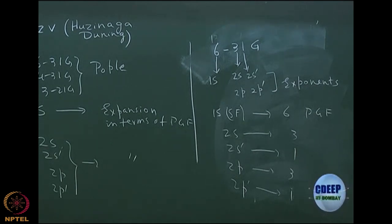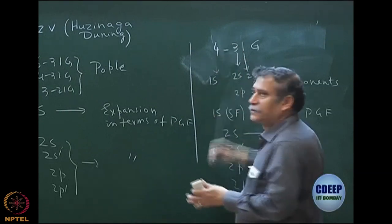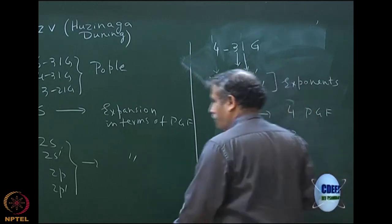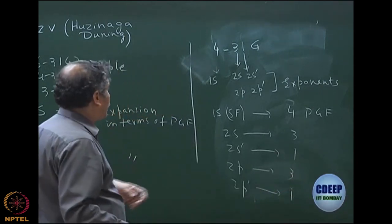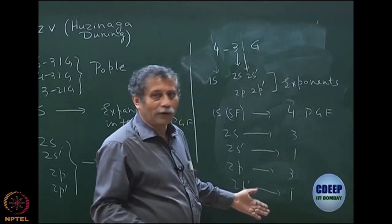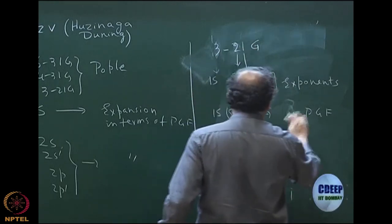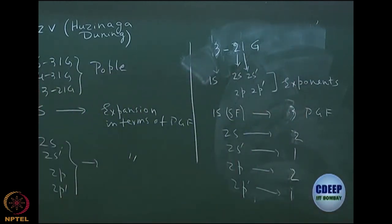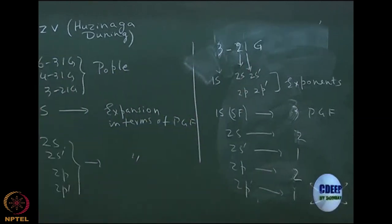If you take 4-31G, the 1s is now expanded in 4 primitives instead of 6 — otherwise it is the same structure. For 3-21G: 1s uses 3 primitives, valence uses 2 and 1. As long as there is one entry before the dash and two entries after the dash, it is this same valence double-zeta structure. For hydrogen, both 1s and 1s' are valence, so you just use the valence entries accordingly.